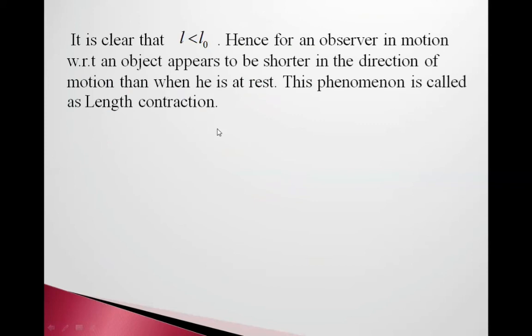It is clear from this that L is less than L0. Hence, for an observer in motion with respect to an object, its length appears to be shorter in the direction of motion than when he is at rest. This phenomenon is called length contraction.